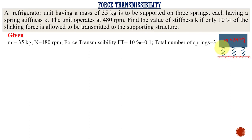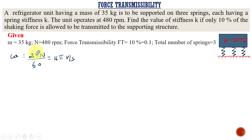Only 10% is allowed to be transmitted, and the total number of springs is 3. The first thing we are going to calculate is the omega value — that is, the angular velocity of the system. Omega is equal to 2π n by 60, which gives 16π radian per second.